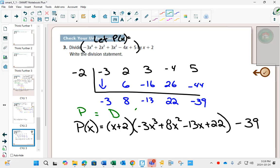And then we have a remainder of negative 39, so I subtract 31 in the end. This is your polynomial equals divisor, quotient plus remainder.